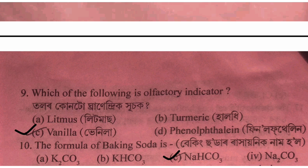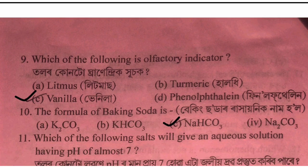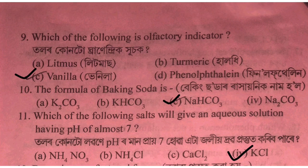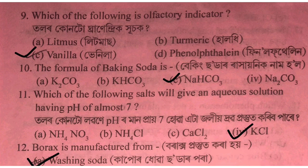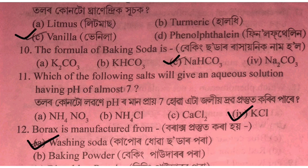The formula of baking soda — option B/C: NaHCO3. That is sodium hydrogen carbonate. The formula is NaHCO3.